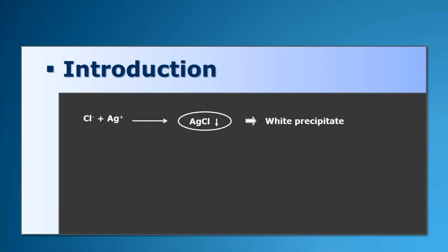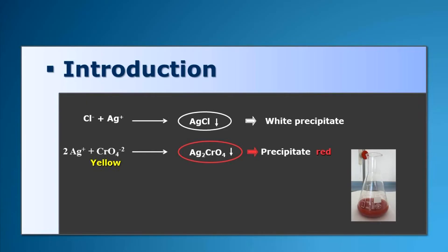Introduction. The chlorides react with the silver forming silver chloride and a white precipitate, until a precipitate of pinkish red appears, which indicates that it has reached the end of the assessment.